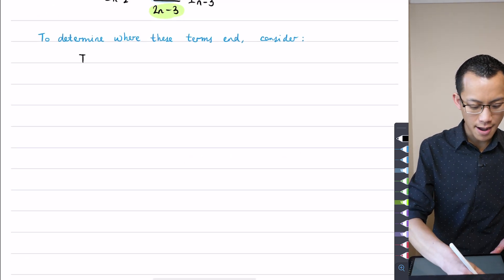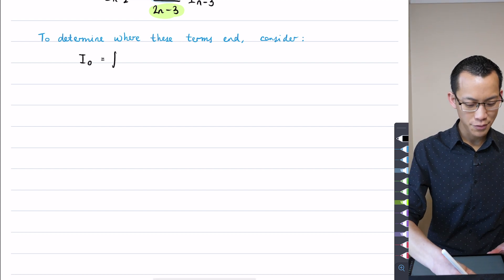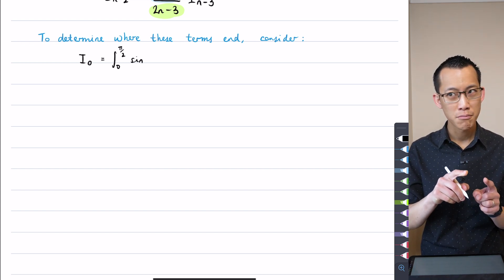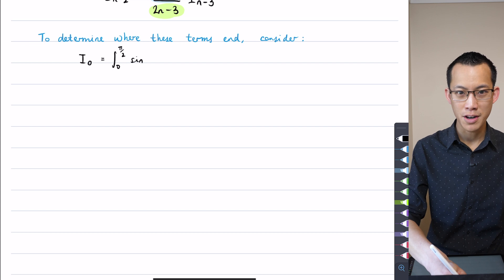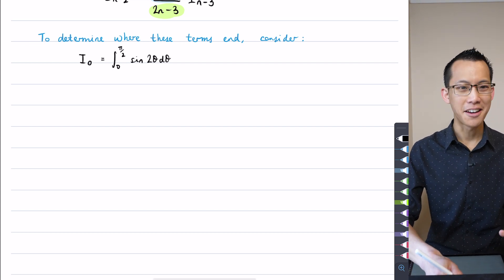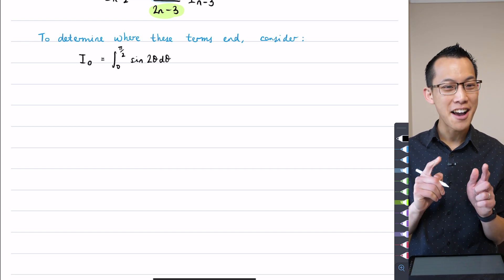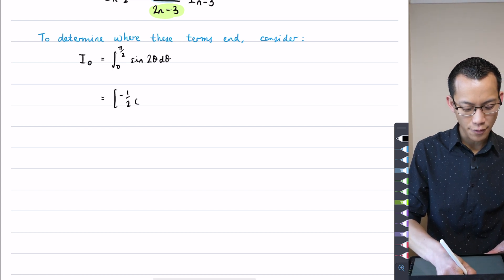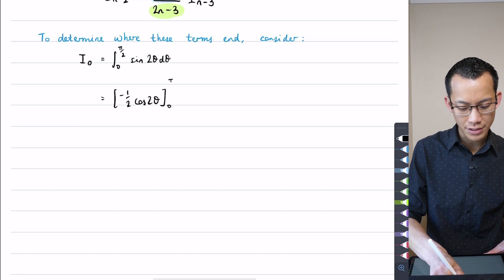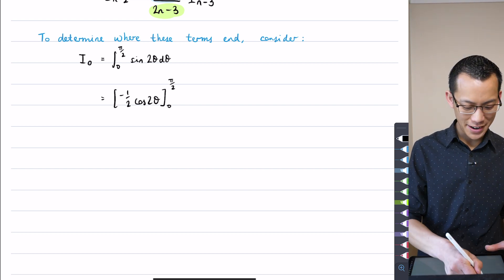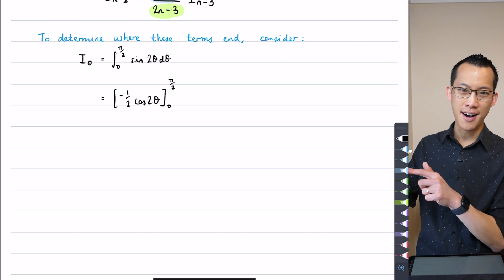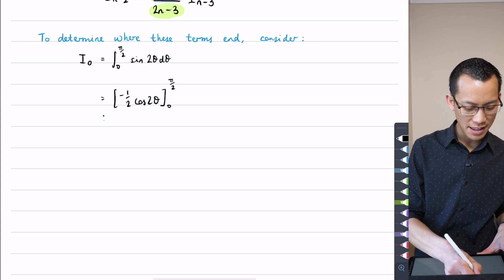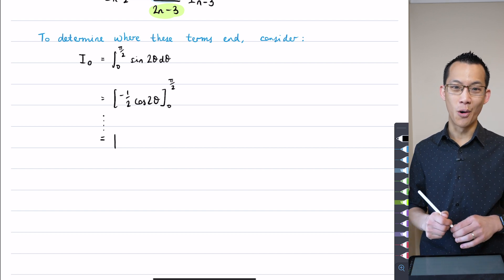Let's go ahead and evaluate i0. It's going to be the integral from 0 to pi on 2 of sine, here comes the 2 times 0, which is 0, plus 1. So that's just 1. Sine of 2 theta d theta. That's a relief. This I know how to integrate. In fact, I already integrated this exact thing back when I did integration by parts. This is going to be negative 1 half of cos 2 theta. And here are my boundaries, 0 to pi on 2. Hopefully this is fairly routine. At this point, if you pull out your negative 1 half, you're going to be evaluating cos pi and cos 0. I think you guys can handle that. By the time you get through those lines of working, I hope you land on 1.